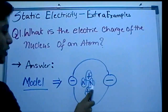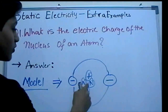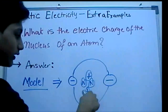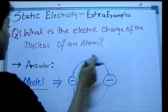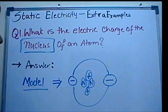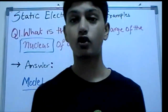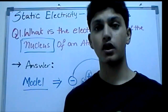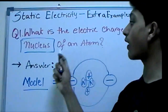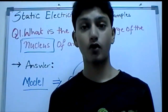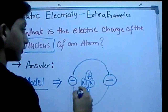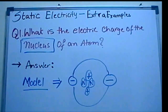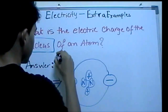Now, you have neutrons with neutral charges, protons with positive charges, and electrons orbiting the nucleus with negative charges. The question asks for the electric charge of the nucleus. The nucleus is made up of neutrons and protons. When you add neutrons and protons together, the electric charge of the nucleus is positive. So the answer is positive.